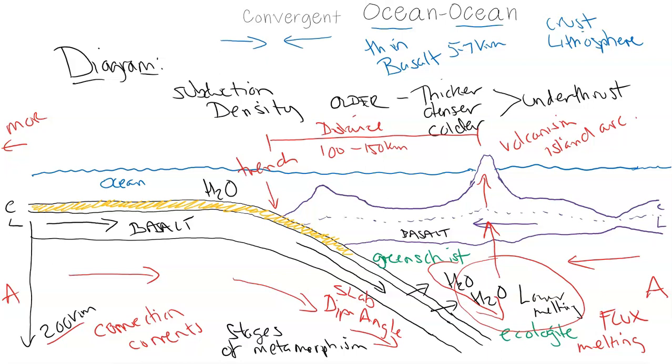So we have our trench, we have our volcanism, our island arcs, our little islands, volcanic islands like in the Caribbean that are formed through this way. Now over here, this is interesting. Over here we have our area of accretion.